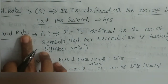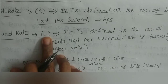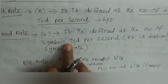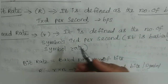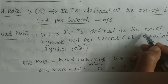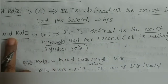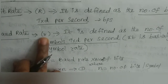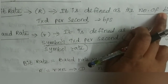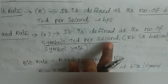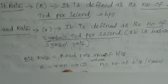Baud rate is denoted by the letter small r. It is defined as the number of symbols transmitted per second — basically it is a symbol rate. Number of bits transmitted per second is bit rate; number of symbols transmitted per second is baud rate, denoted by small r.